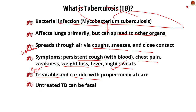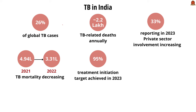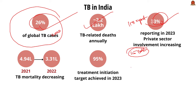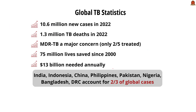India bears a disproportionately large burden of the world's tuberculosis rate, with 26% of incident TB cases globally. In 2020, TB caused about 2 lakh 20,000 deaths every year in India. According to the India TB Report 2024, private sector TB reporting rose to 33% in 2023, up from 1.9 lakh in 2015. India's TB mortality dropped from 4.94 lakh in 2021 to 3.31 lakh in 2022. India reached its 2023 target of initiating treatment in 95% of patients diagnosed with the infection.